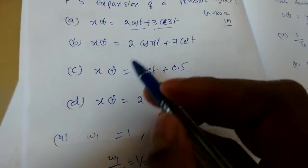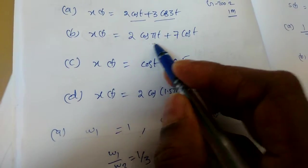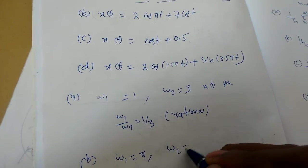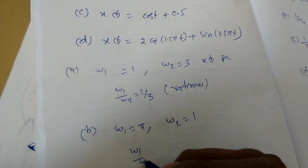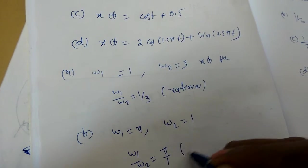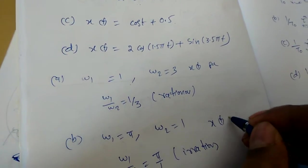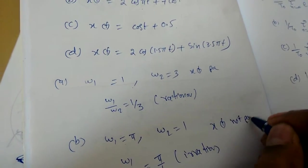Next b, this is 2 cos pi t plus 7 cos t. That is omega 1 equals pi, omega 2 equals 1. So omega 1 by omega 2 is pi by 1, which is a rational number. That is, x of t in this b is not a periodic signal.